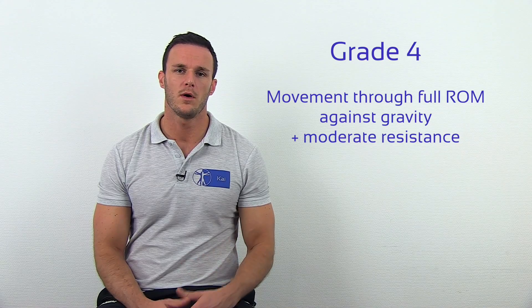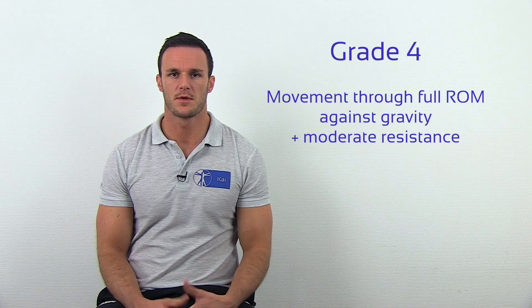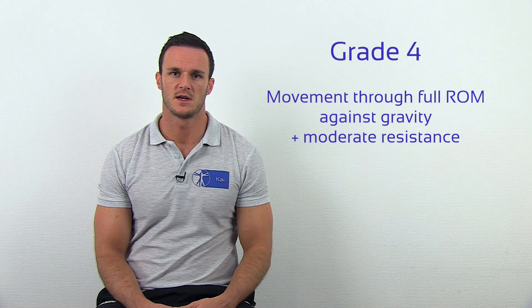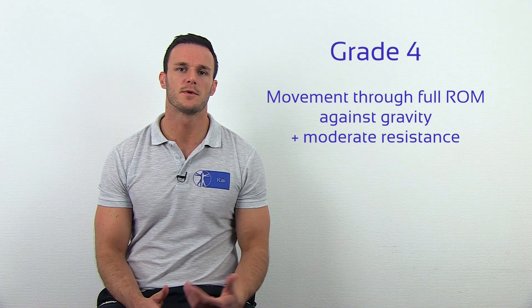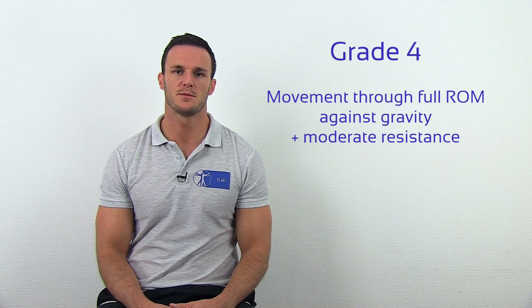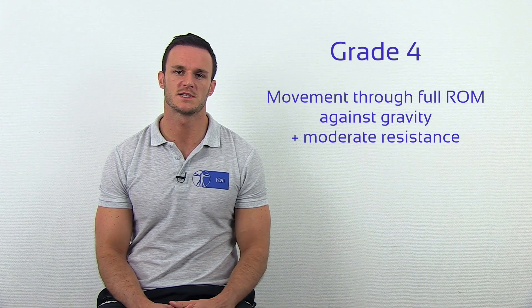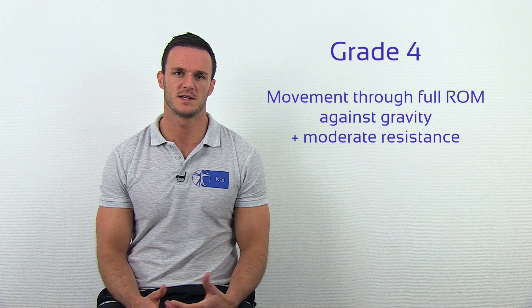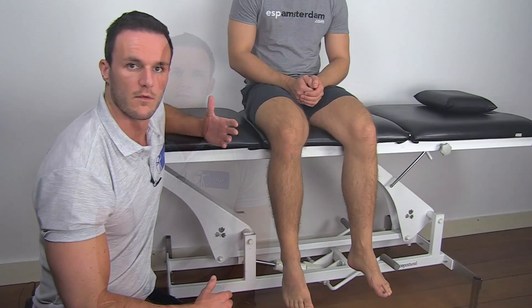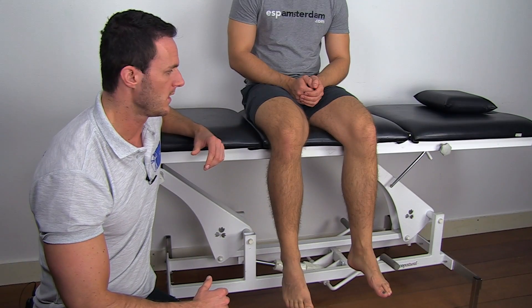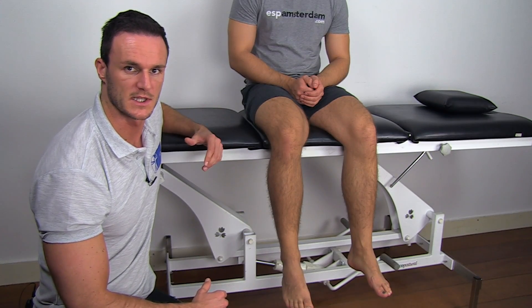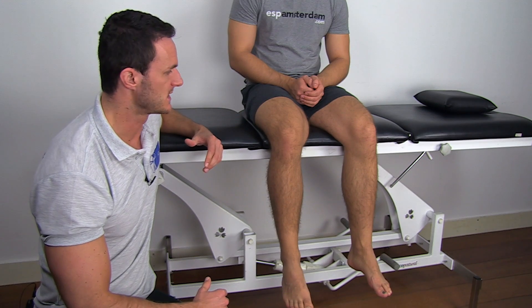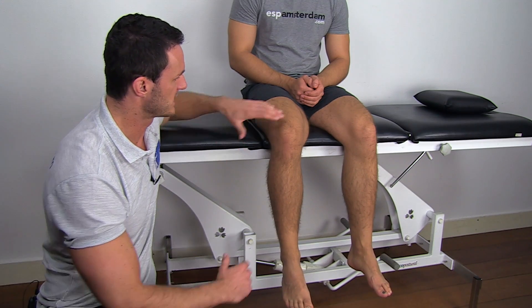Grade 4: weakness with resistance. So your patient can move through the full range of motion with moderate resistance coming from the examiner. For grade 4, I will give moderate resistance against the extension of my patient's knee.